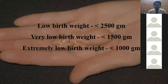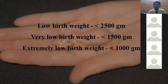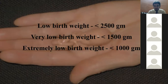This is an important classification of low birth weight. Normal birth weight is considered 3 kg (3000 grams). If the baby is born at less than 2.5 kg, it is called low birth weight. Less than 1500 grams is called very low birth weight. Less than 1000 grams is called extremely low birth weight. These are the three conditions associated with low birth weight.